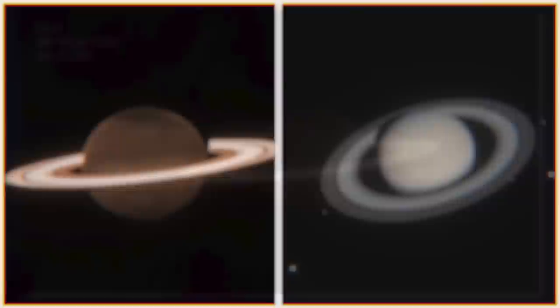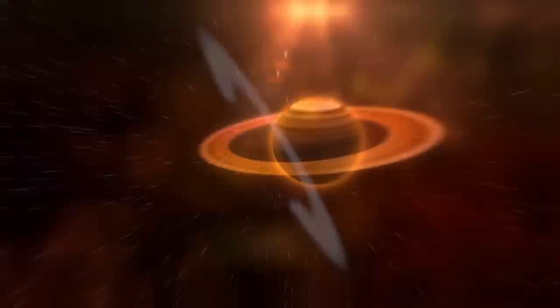Webb's capture of Saturn appears starkly different from past images of the planet. Gone are the gas giant's recognizable bands, and in their place is a darker-looking orb, encircled by rings. It's not a familiar view of Saturn by any stretch of the imagination, said Lee Fletcher, a planetary scientist at the University of Leicester.